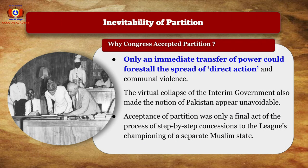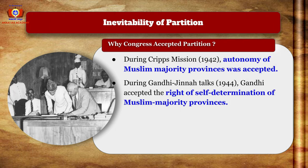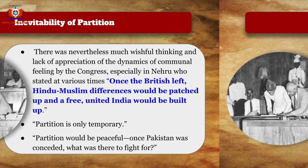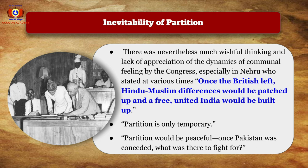Only an immediate transfer of power could forestall the spread of direct action and communal violence. The virtual collapse of the interim government also made the notion of Pakistan appear unavoidable. During the Cripps Mission of 1942, autonomy of Muslim-majority provinces was accepted, and during Gandhi-Jinnah talks in 1944, Gandhi accepted the right of self-determination of Muslim-majority provinces. There was wishful thinking by the Congress, especially Nehru, that once the British left, Hindu-Muslim differences would be patched up and a free, united India built — and that partition would be peaceful once Pakistan was conceded.